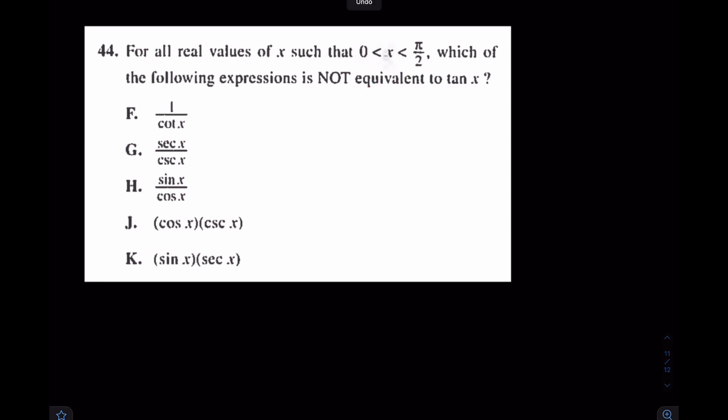First of all, is it f? Well, cotangent is 1 over tangent. In other words, they are reciprocal, so 1 over cotangent, that is equal to tangent. So that's wrong. What about the next one, secant over cosecant?